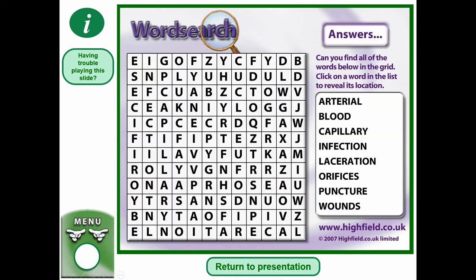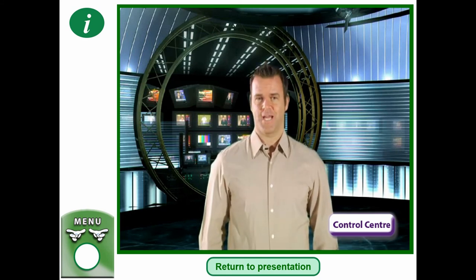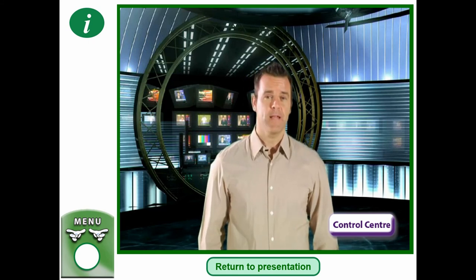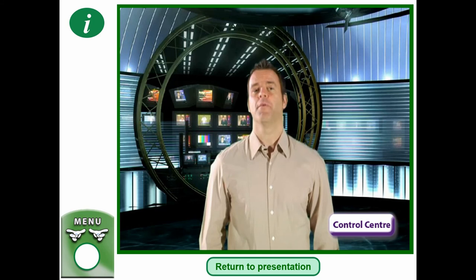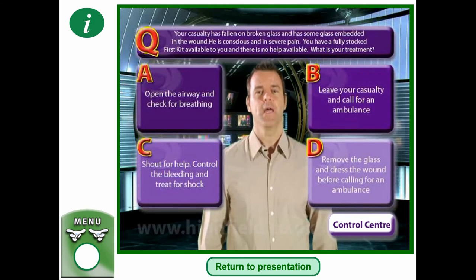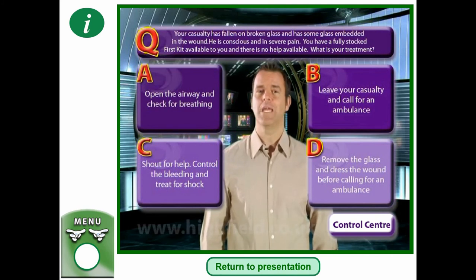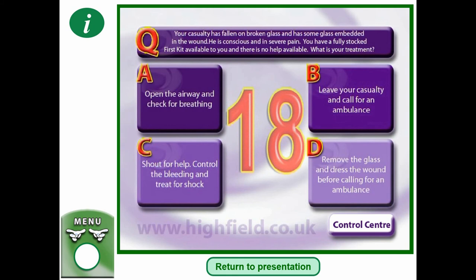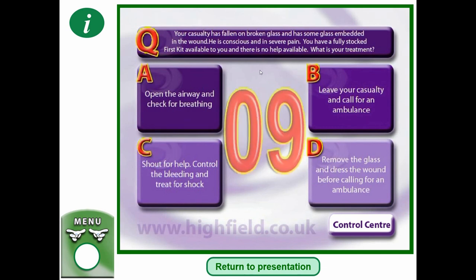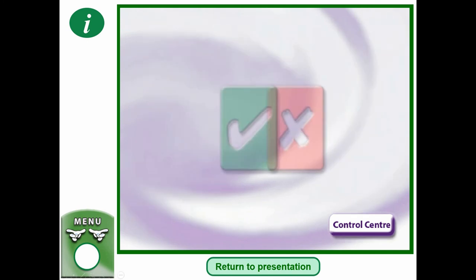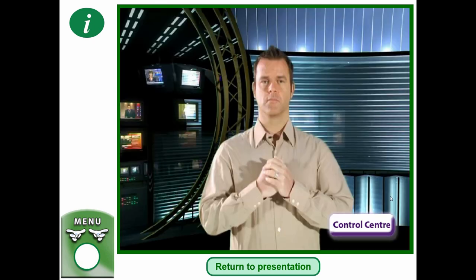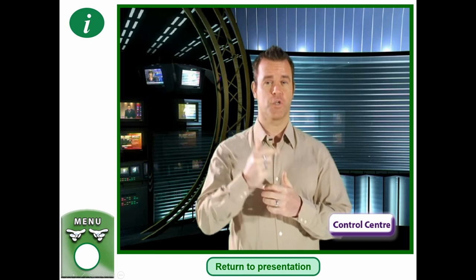Your casualty has fallen on broken glass and has some glass embedded in the wound. He's conscious and in severe pain. You have a fully stocked first aid kit available and there is no help available. What is your treatment? a) Open the airway and check for breathing, b) leave your casualty and call for an ambulance, c) shout for help, control the bleeding and treat for shock, or d) remove the glass and dress the wound before calling for an ambulance. The answer is C — shout for help, control the bleeding, and treat for shock.